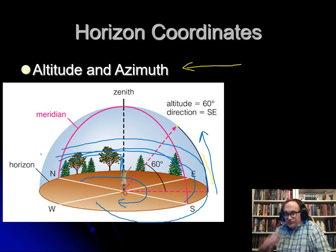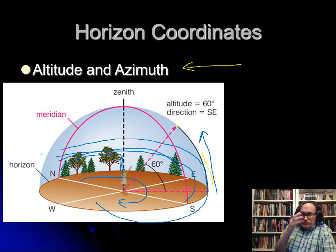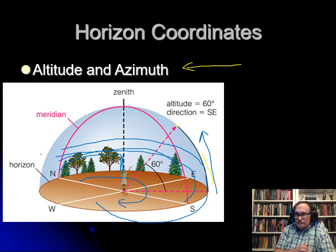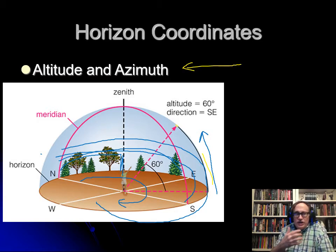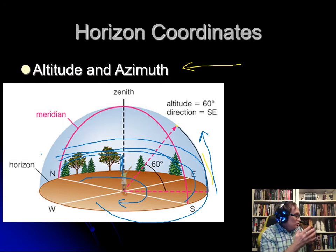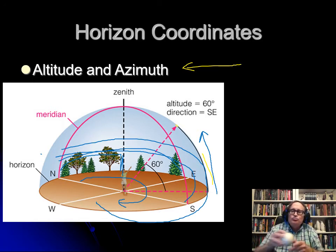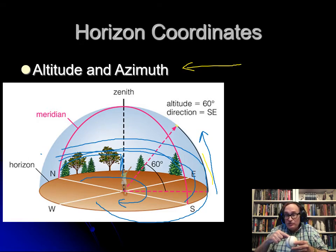So you've got horizon coordinates with altitude and azimuth, but it depends on where you are and when you are — which is really interesting, because Earth is round and where you are makes a difference in what the sky looks like.